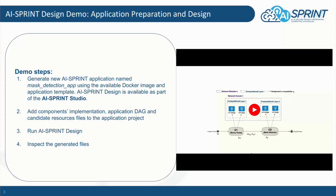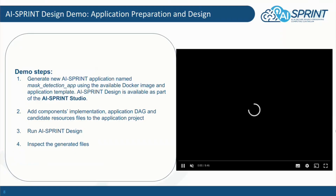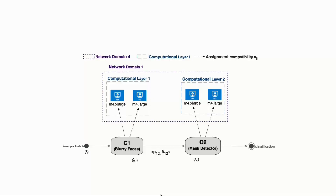Then we run the AI Sprint design tool and finally we inspect the generated files. The considered application is composed by two components: the blurry faces and the mass detector. The application takes an image as input, it anonymizes the faces in the image, and finally detects if each person is wearing a mask by classifying the detected faces. The candidate computational layer for the two components belong to the same network domain. Each computational layer has two candidate resources, which are two alternative AWS instances, the M4 large and the X large.